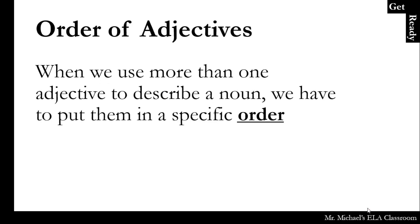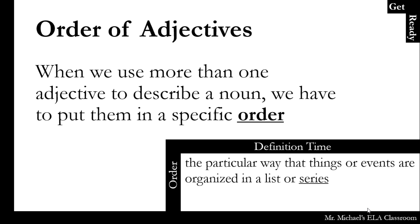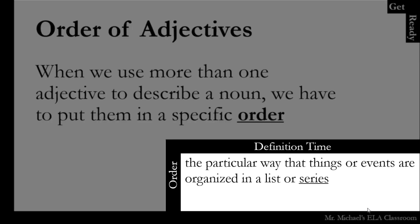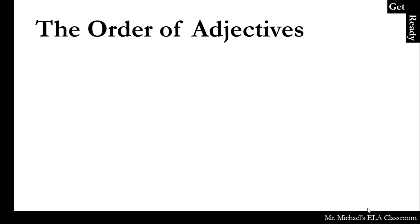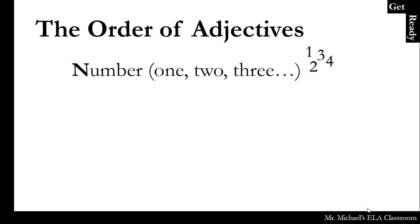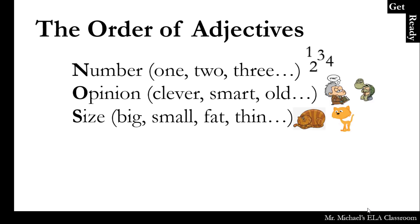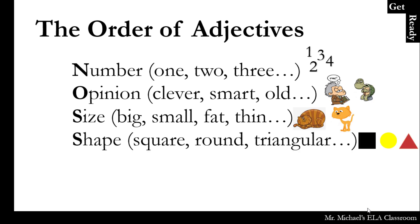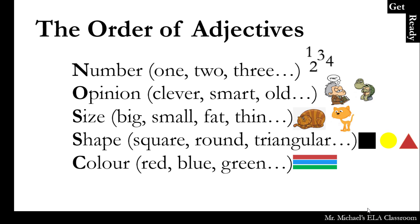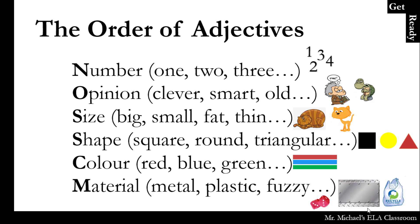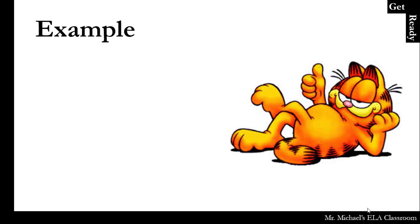So let's look at the order of adjectives. When we use more than one adjective to describe a noun, we have to put them in a specific order. An order is the particular way that things or events are organized in a list or series. So the order of adjectives is: first number, then opinion, then size, shape, color, and material. The first one we use is number, and the last is material.